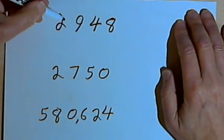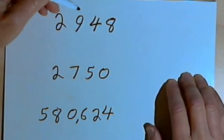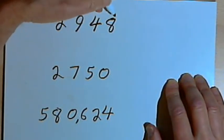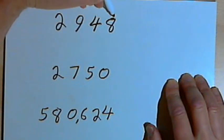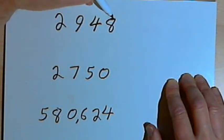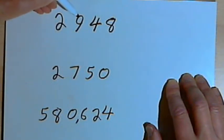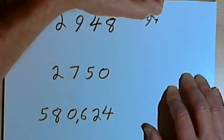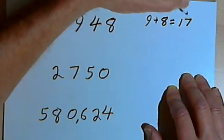So here's how we decide whether a number is divisible by 11. I've got these three numbers here; I'm going to start with 2,948. To decide whether I can divide this by 11, I'm going to take the digits in the odd positions starting from the right end of the number. So going from the right, the first digit from the right is an 8, so that's an odd position. And the third digit from the right is a 9, so the first and third positions are odd positions. I'll take those two digits, the 9 and the 8, and add them together. So 9 plus 8 equals 17.